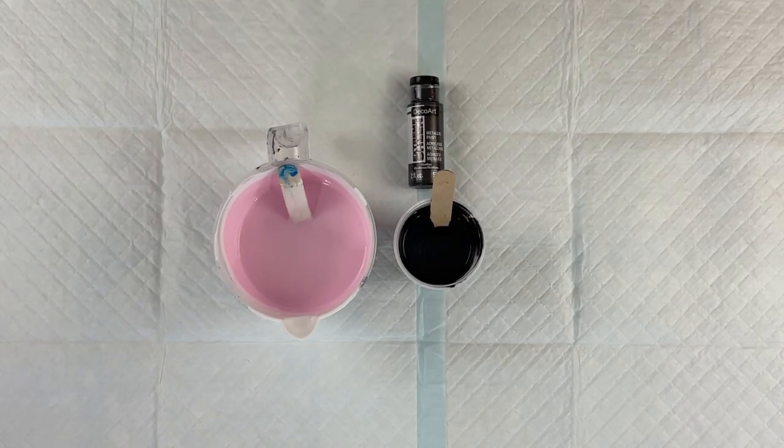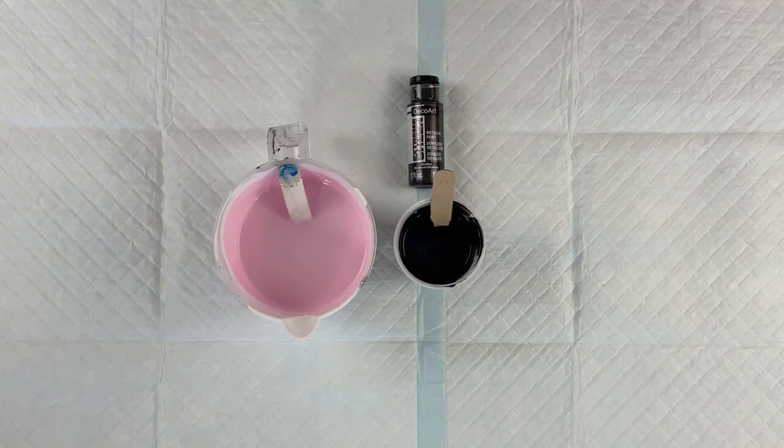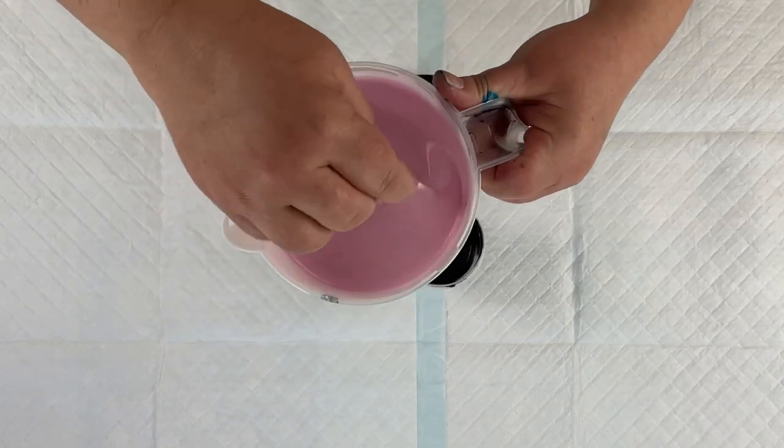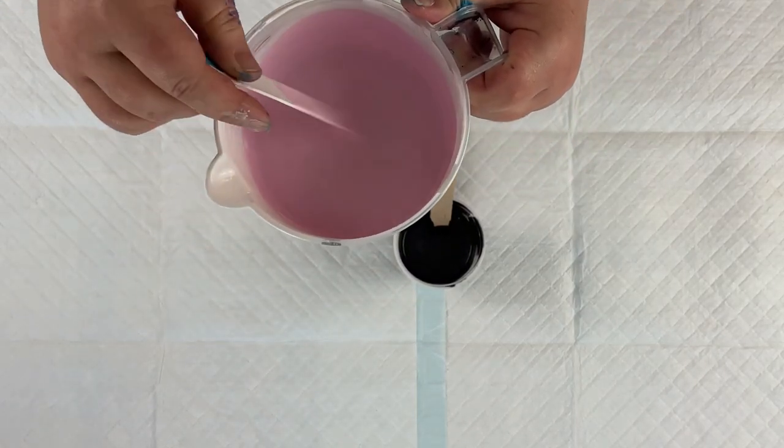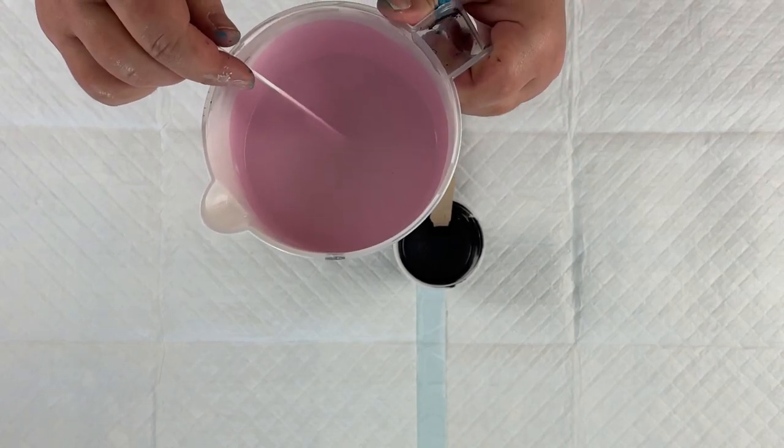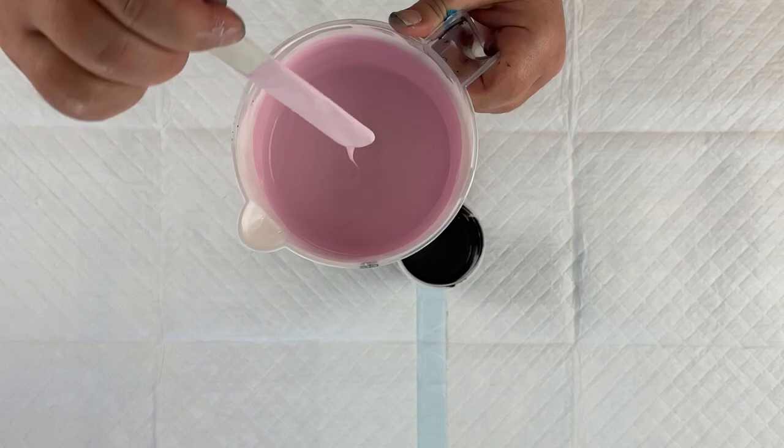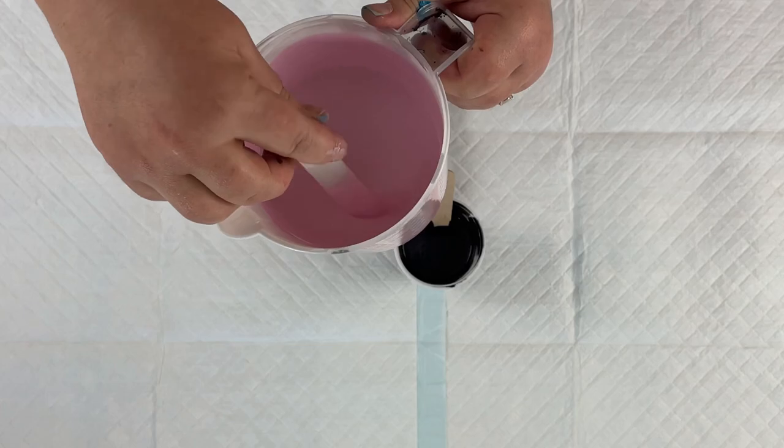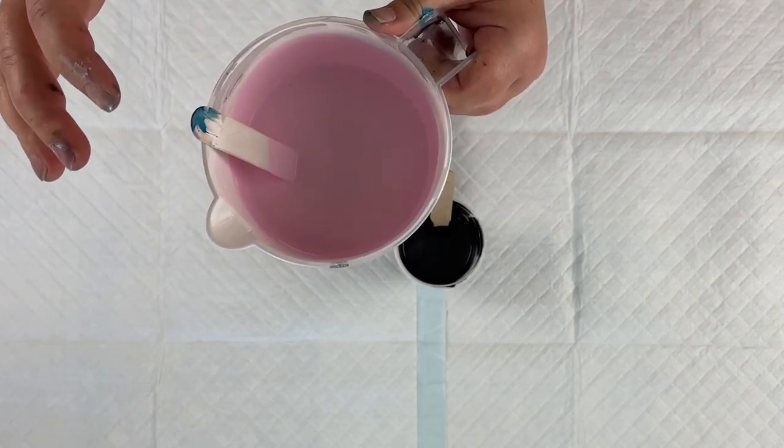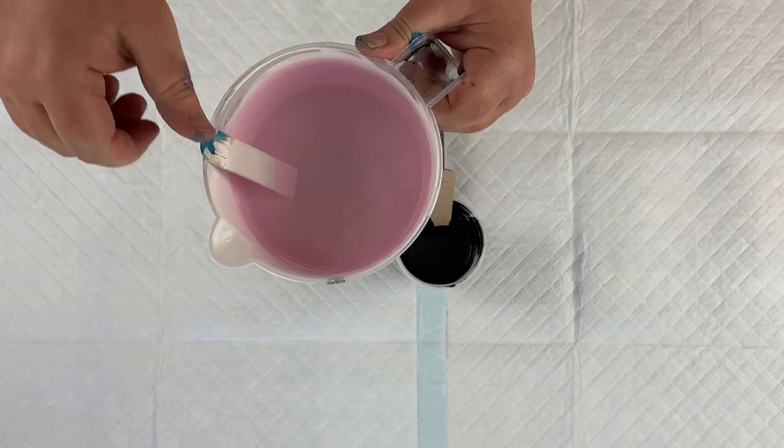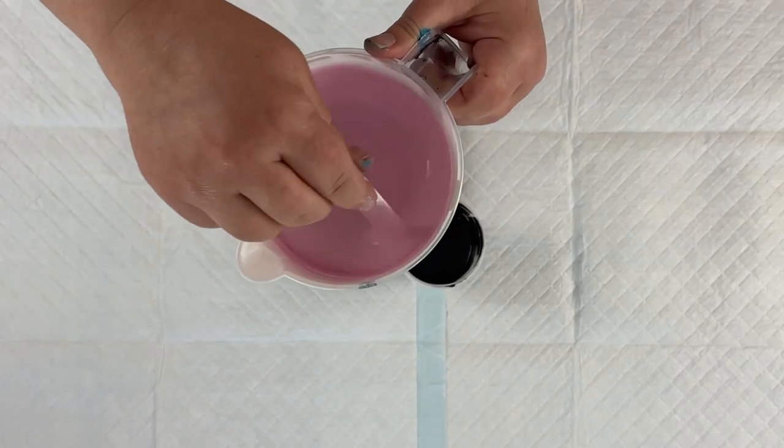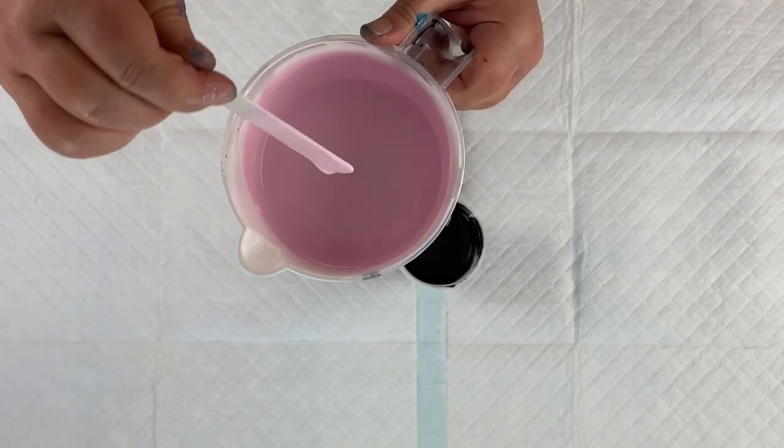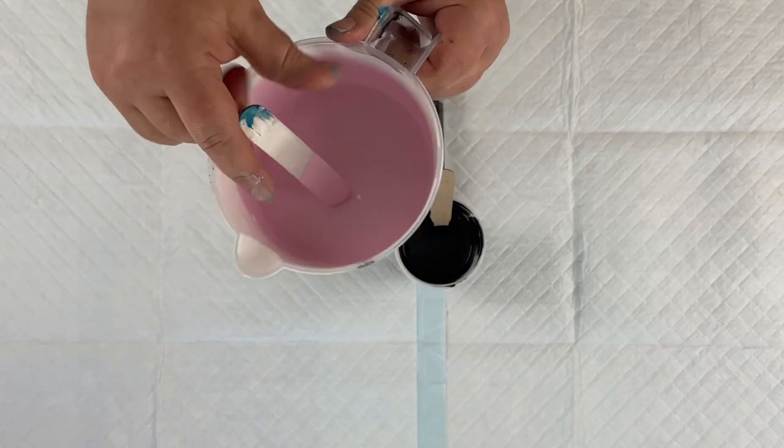I think I'm feeling springy and Easter-y or something because I mixed up this very pale pink. Now this is like 99.97% white, Artist Loft Flow Acrylic White. And I literally put like a drop of Artist Loft Flow Acrylic Red into the white and it created this really kind of pretty cotton candy pink color that I think is really pretty.